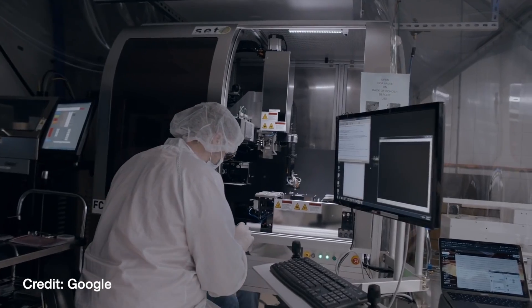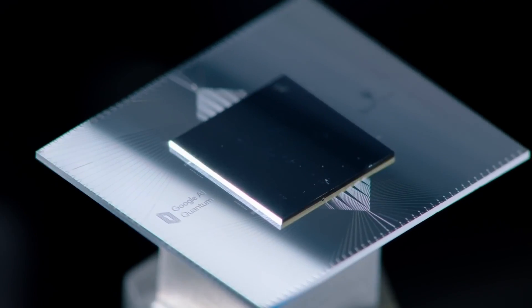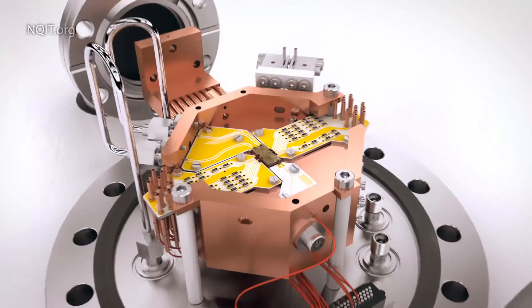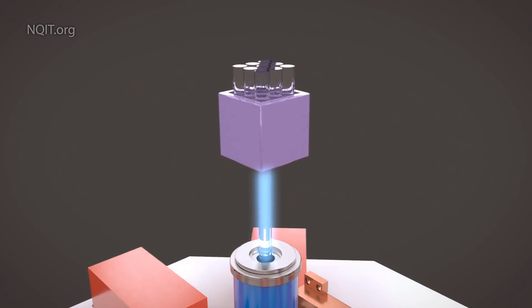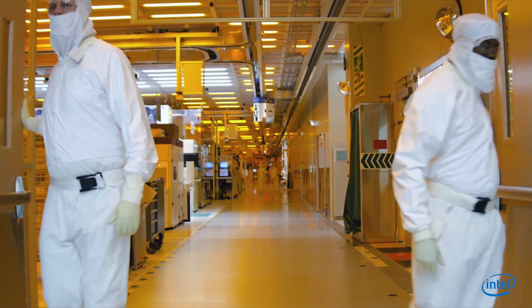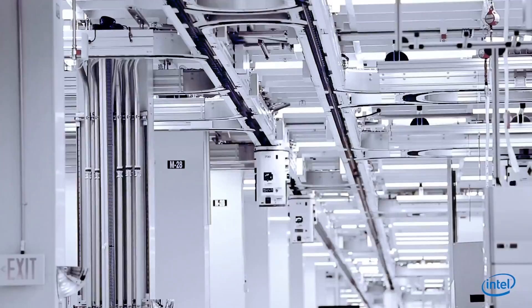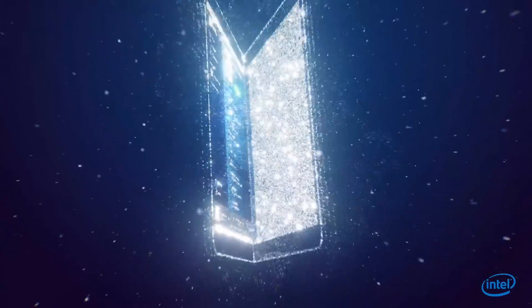Some of the biggest tech firms are developing superconducting qubits, which require extremely low temperatures. Another approach uses lasers to trap ions in a vacuum, reducing interference.